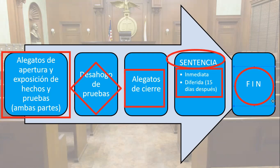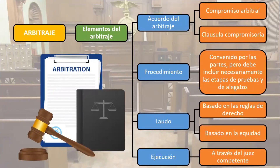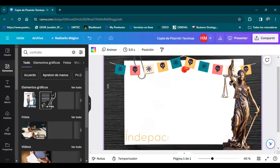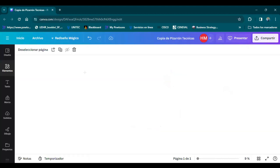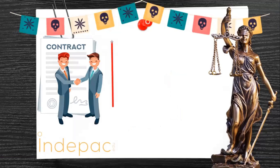Empezamos con el tema del arbitraje. El compromiso arbitral se va a fijar dentro del propio contrato mediante una cláusula compromisoria: las partes acuerdan que en caso de existir un conflicto, lo resolverán a través del arbitraje. Hay dos tipos: el arbitraje ad hoc, en el cual las partes fijan sus propias reglas y establecen quién es el árbitro; y el arbitraje institucional, en el cual acuden a un órgano de arbitraje especializado.